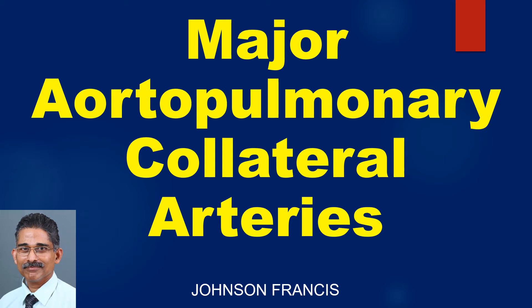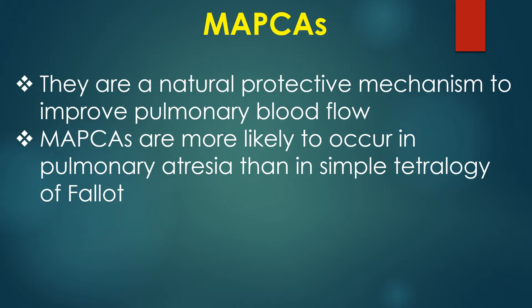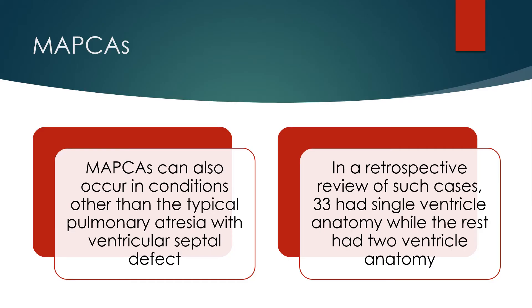Major Aortopulmonary Collateral Arteries, or MAPCAS, occur in cyanotic congenital heart diseases with decreased pulmonary blood flow, such as tetralogy of Fallot-like physiology. They are a natural protective mechanism to improve pulmonary blood flow. MAPCAS are more likely to occur in pulmonary atresia than in simple tetralogy of Fallot, but can also occur in conditions other than the typical pulmonary atresia with ventricular septal defect.